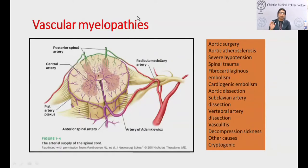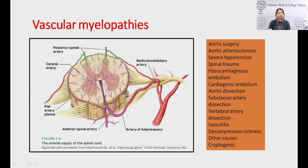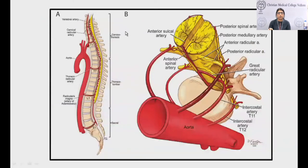Vascular myelopathy — the most important is the anterior spinal artery infarction causing anterior cord syndrome. The spinal cord segment is supplied by a single anterior spinal artery, a branch of the vertebral artery, and paired posterior spinal arteries. Each segment is further supplied by radicular or radiculomedullary arteries — from the vertebral artery or thyrocervical trunk at cervical level, from intercostal arteries at thoracic level, and from branches of the aorta at lumbar level.